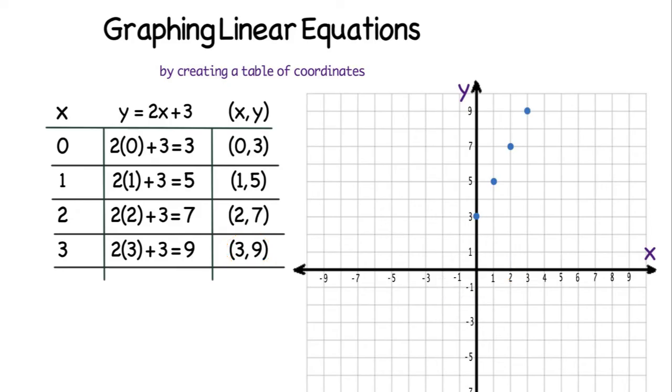I do notice a linear pattern, and to show that linear pattern, I'm going to take my ruler and connect those four dots, which represent four solutions to y equals 2x plus 3. But I also need to include an arrow at the end to show that these answers go on forever. If I had chosen other x values, I would have other possible answers. So by connecting my dots, I'm showing all possible solutions.